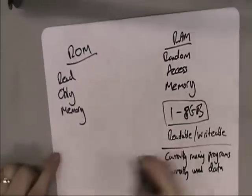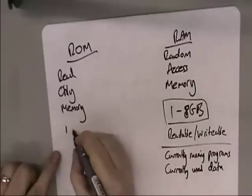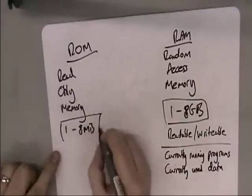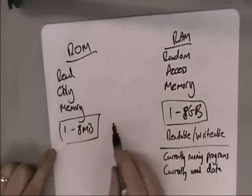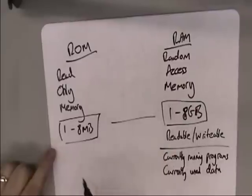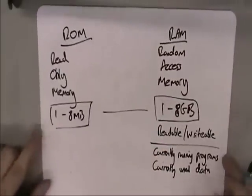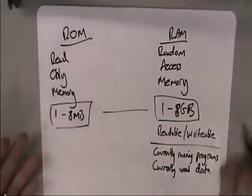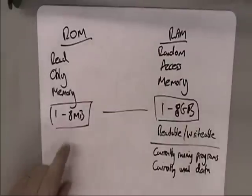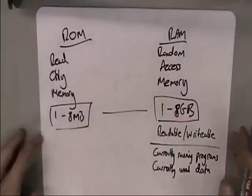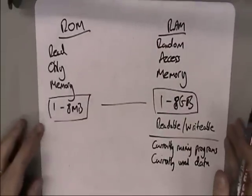ROM, on the other hand, is typically 1 to 8 megabytes — so much, much smaller, about 1,024 times smaller. On your computer it might be 2 megabytes, it might be 4, it might be 8. But that typically is the kind of size you get on most desktop computers.